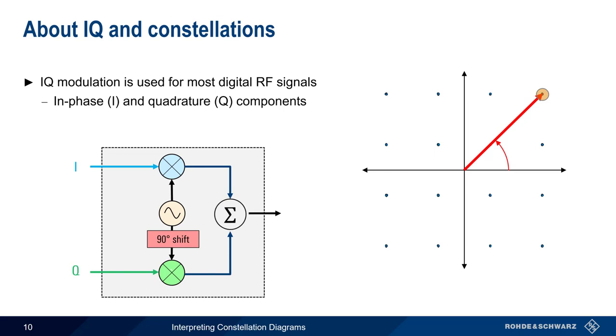The two axes on our constellation diagram, therefore, correspond to the magnitudes of the I and Q channels. And, as we're about to see, imperfections in the transmit IQ modulator, or receive IQ demodulator, will also distort the constellation.